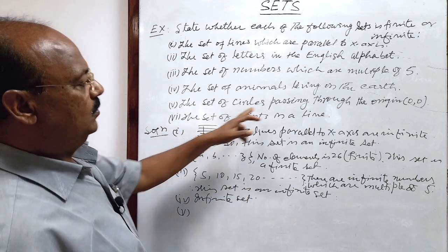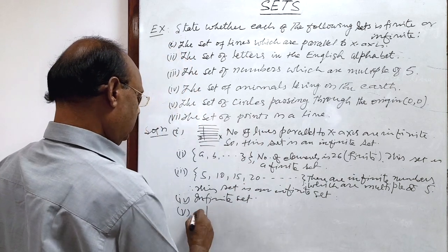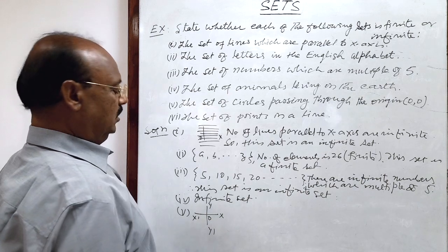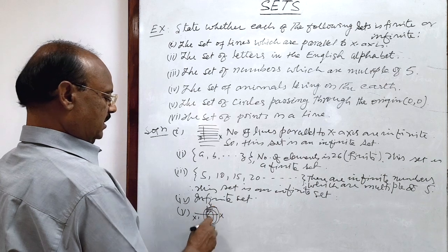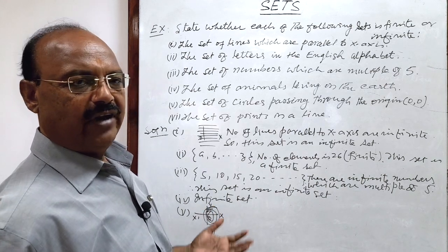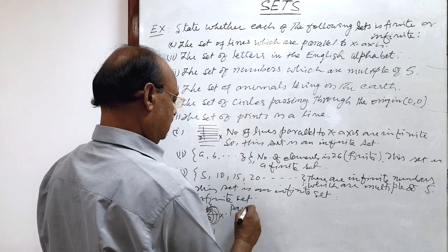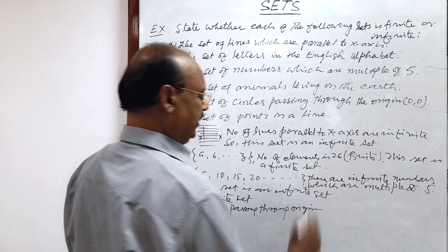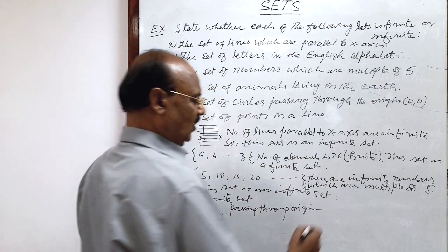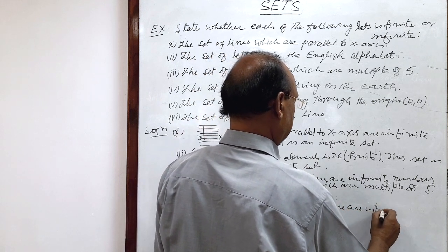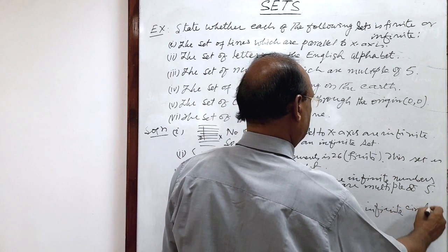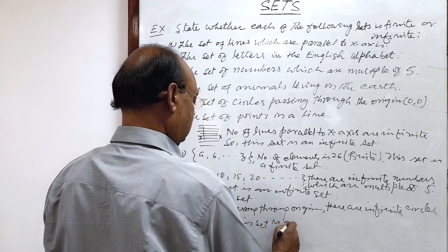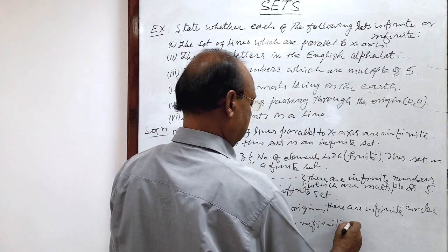Fifth question: the set of circles passing through the origin. In the axis system, passing through any point there can be an infinite number of circles. The origin is also a point like any other point, so passing through the origin there are infinite circles. Therefore, this set is an infinite set.